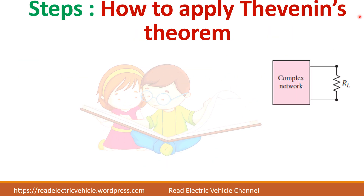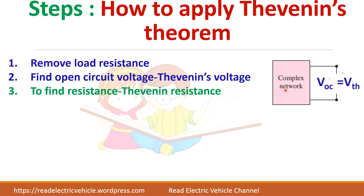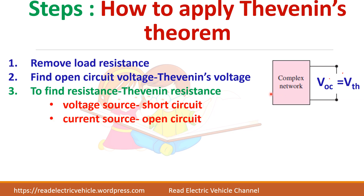Let us see how to apply Thevenin's theorem and get the Thevenin equivalent circuit. First, remove the load and find the Thevenin voltage — that is the voltage across the open circuit terminal. That is called the Thevenin voltage or open circuit voltage. Now, to find the resistance: if you have voltage sources, short circuit them; if you have current sources, open circuit them. Then find the equivalent resistance — that will be the Thevenin resistance.